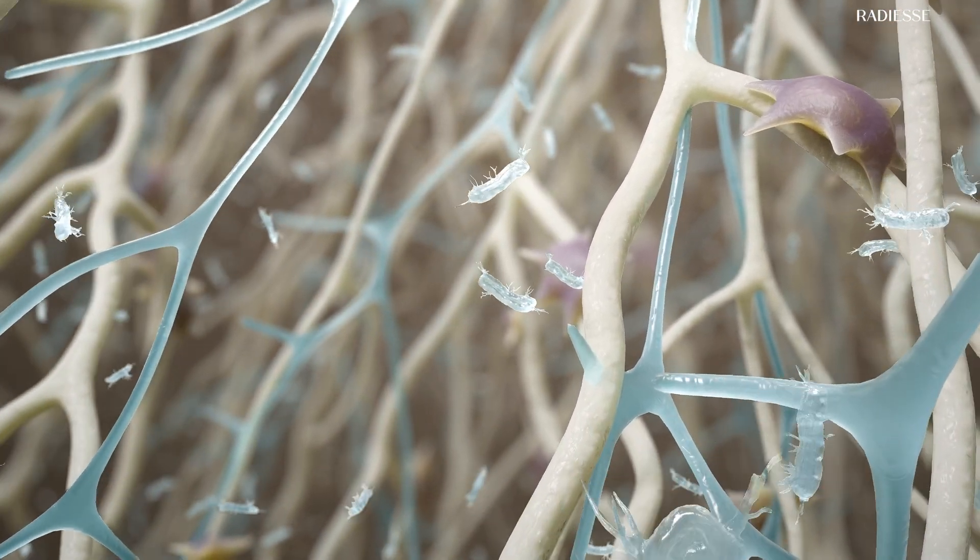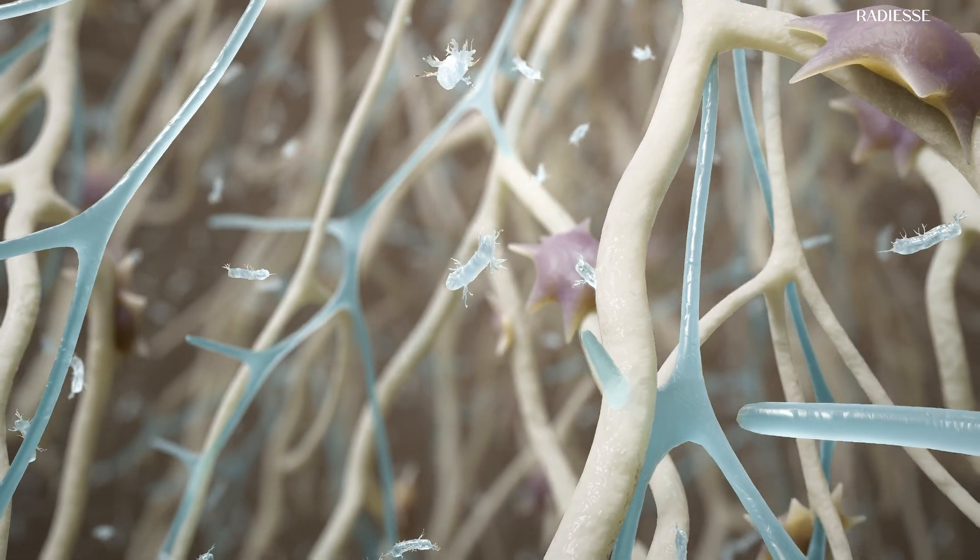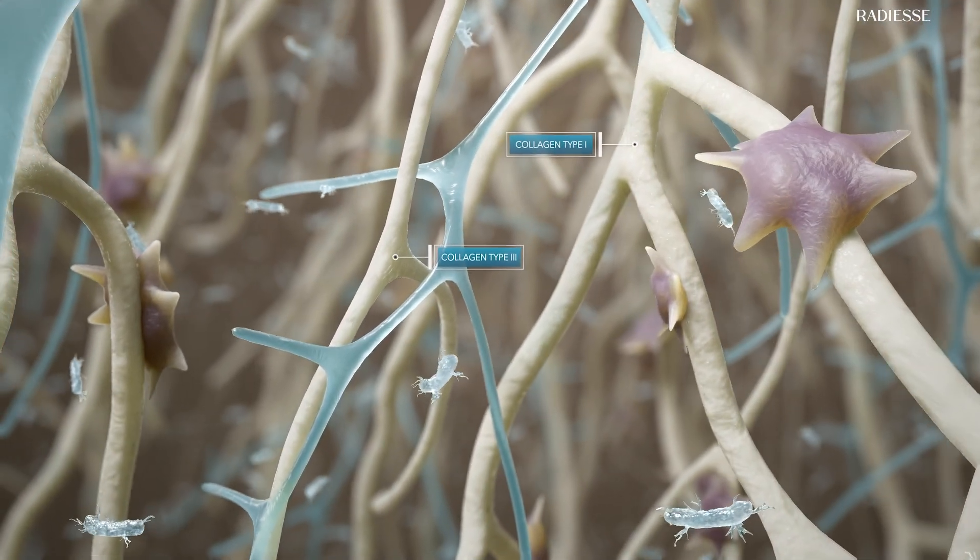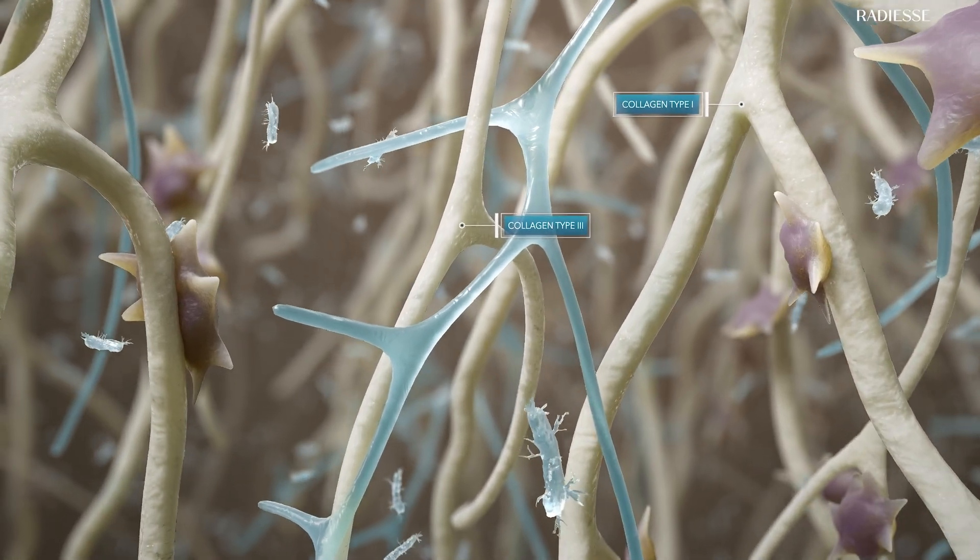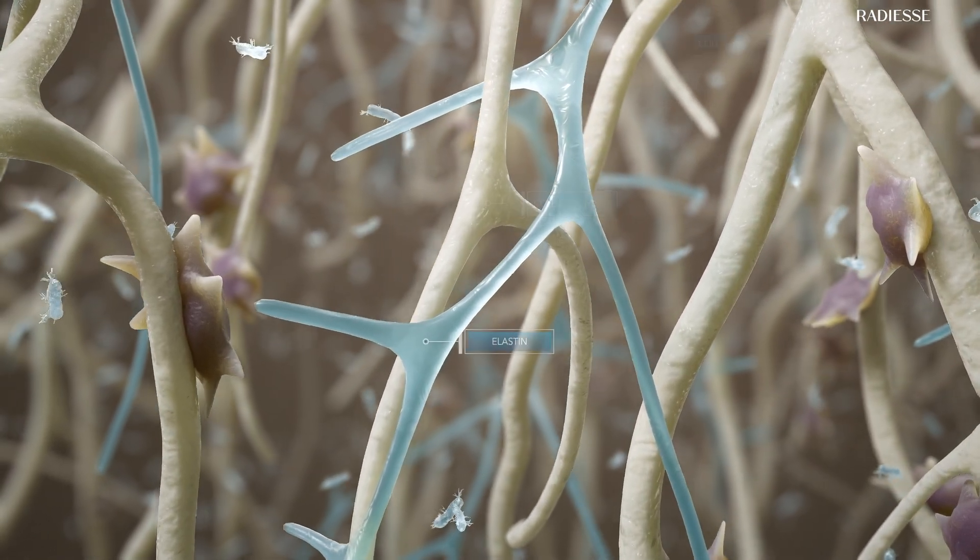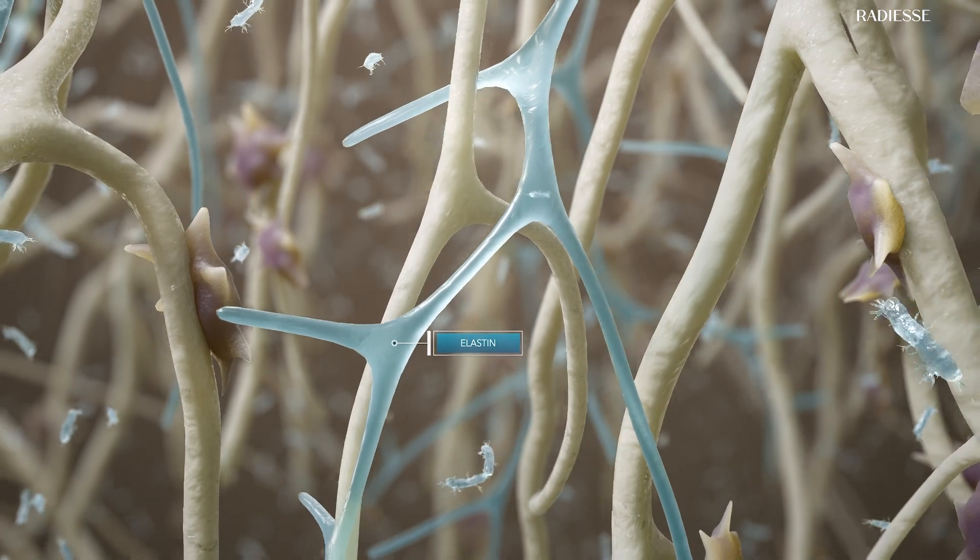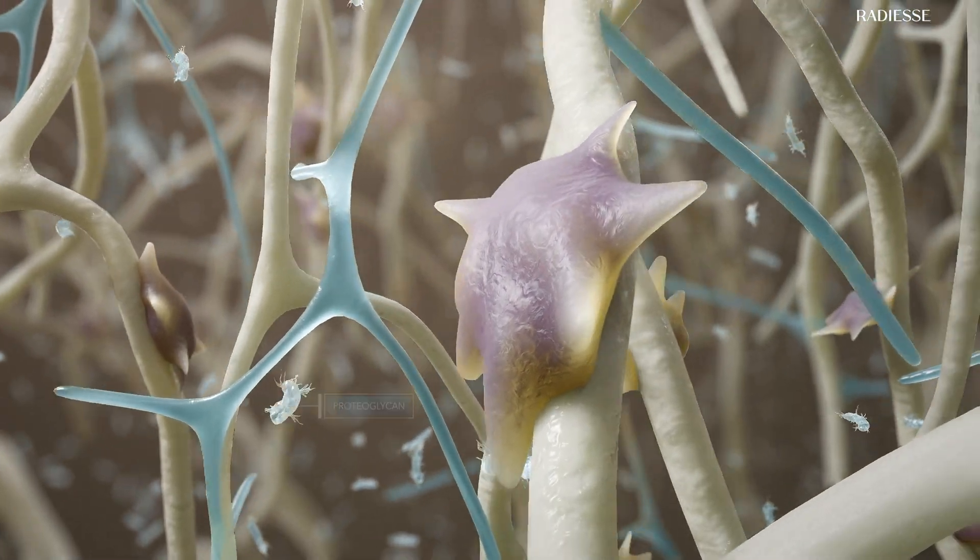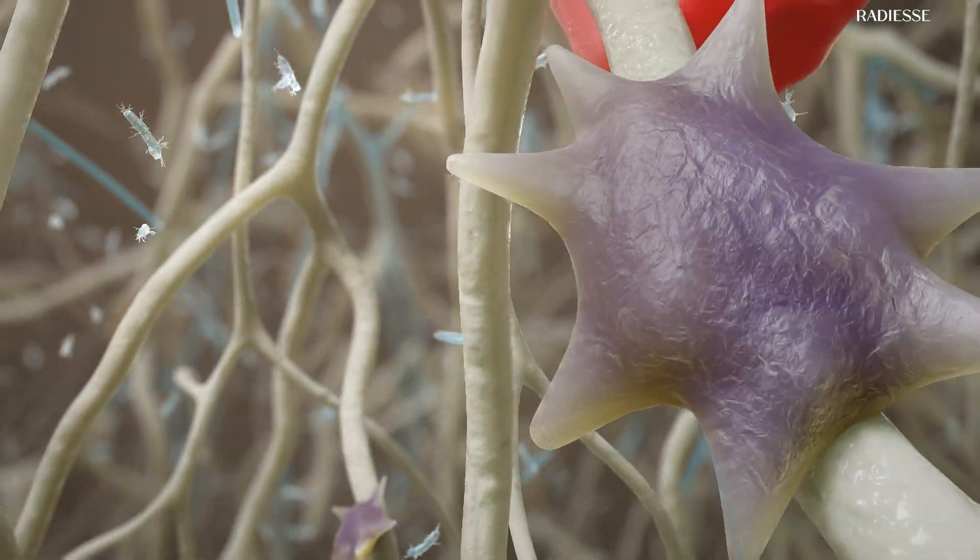Fibroblasts primarily produce ECM components and contribute to their structural organization. Key ECM components include collagen type 3 and type 1, which provides structure and support; elastin, providing elasticity and stretch; and proteoglycans, providing tissue hydration, while angiogenesis provides nourishment.